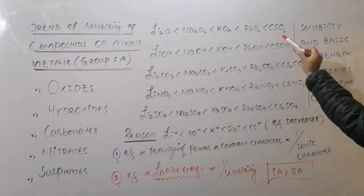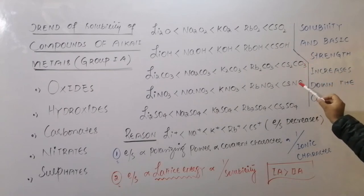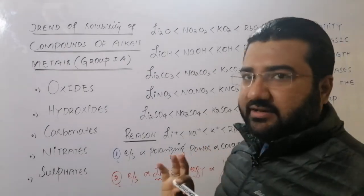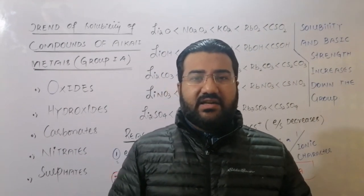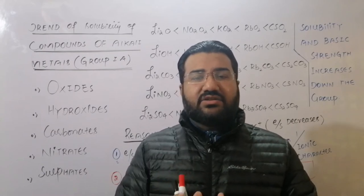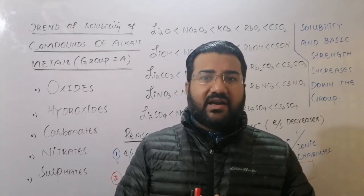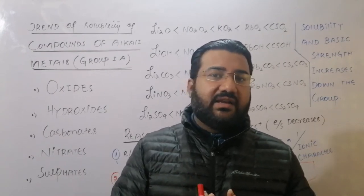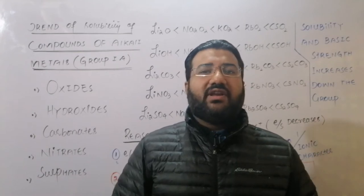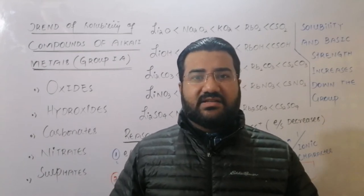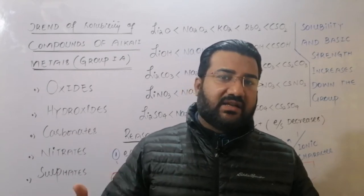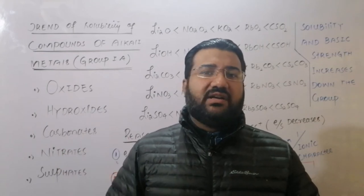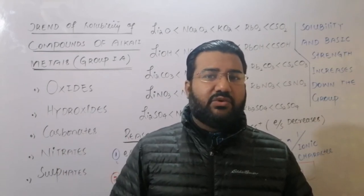While the compounds of cesium — whether cesium superoxide, cesium hydroxide, carbonate, nitrate, or sulfate — are most soluble in water. So the solubility of oxides, hydroxides, carbonates, nitrates, and sulfates of alkali metals keeps on increasing down the group. This will be very easy to answer in MCQs: solubility increases as we move from lithium to cesium.